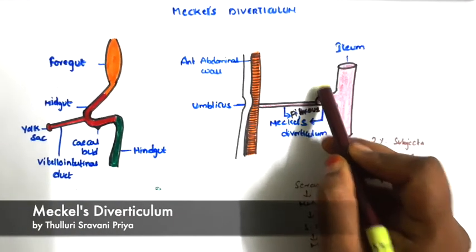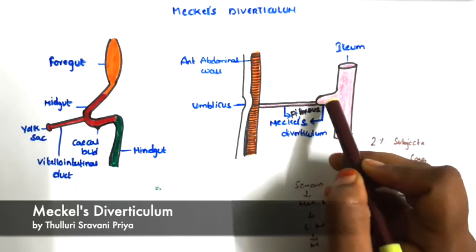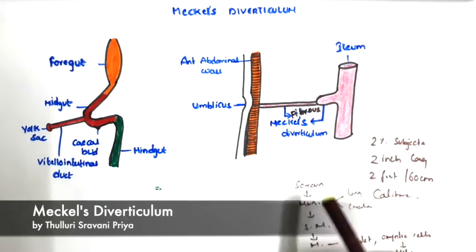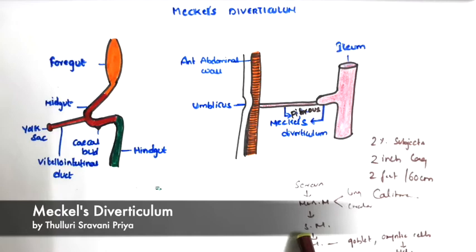Meckel's Diverticulum from outside to inside consists of 4 layers: outer serosa layer, then muscularis mucosa, then submucosa, and then mucosa layer.